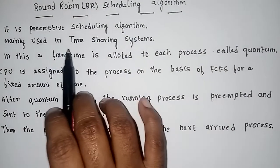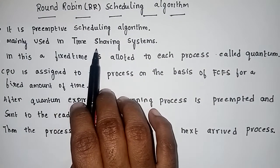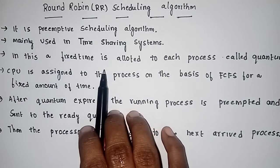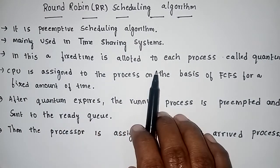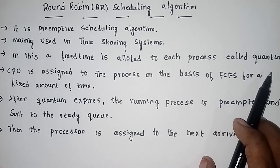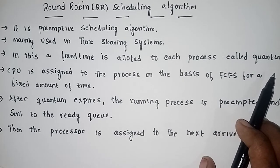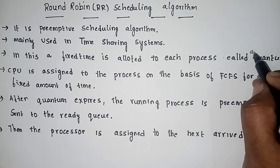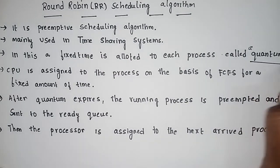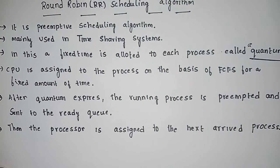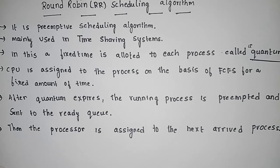Round robin is mainly used in time sharing systems. In this, a fixed time is allotted to each process, called the time quantum or time slice. In every process, one fixed time is allotted as the time quantum or time slice.